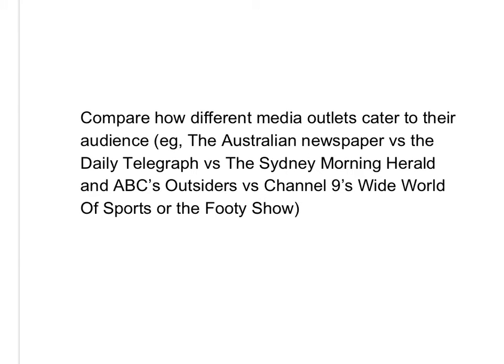Compare how different media outlets cater to their audience. The Australian newspaper is written primarily for a more business-focused audience, whereas the Daily Telegraph is targeted towards the masses or the working class, and the Sydney Morning Herald is somewhere in between. How do they present sports differently to suit their readership? Also look at TV — a show like ABC Outsiders versus Channel 9's Wide World of Sports. Watch both programs and you will see a difference. Read the newspapers, look online — what are you finding? Draw that knowledge into your reflections.